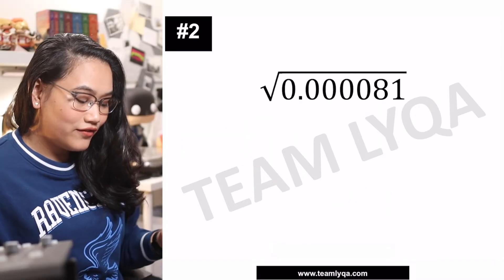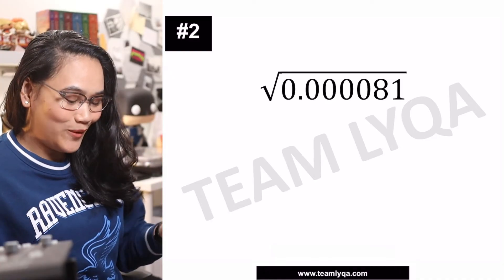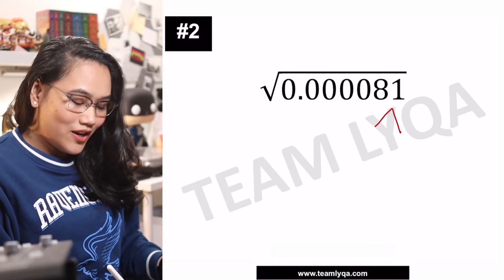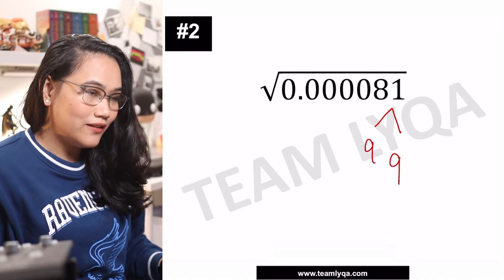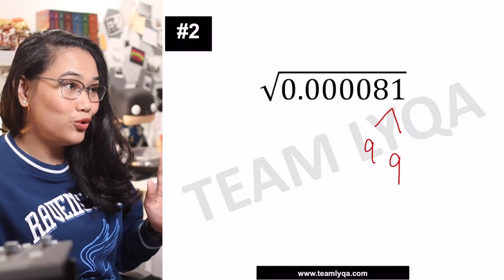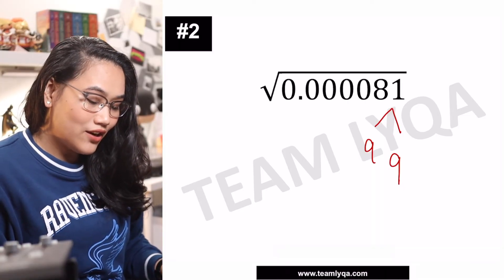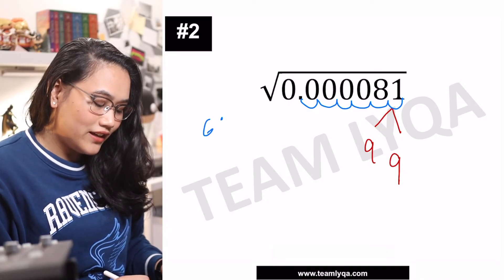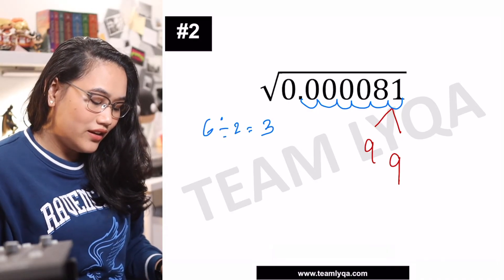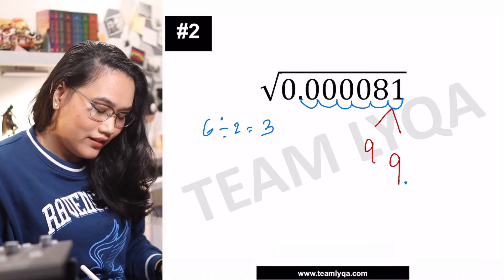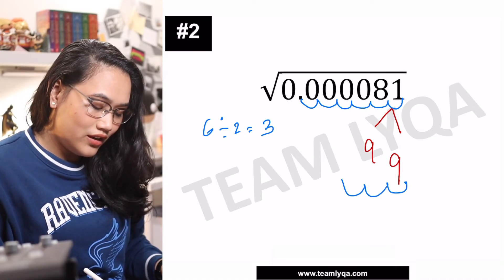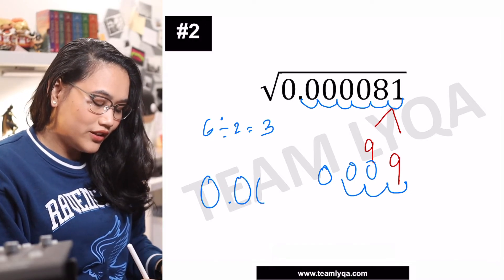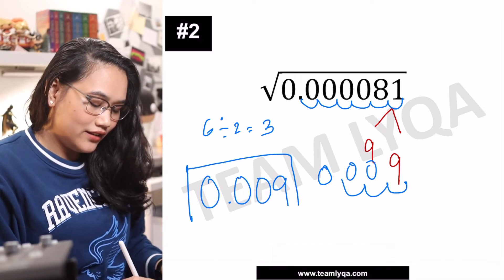Next, we have √0.000081. Same thing. We'll just split it. 81 is just 9 times 9. So that means 9 is the last digit of our answer. Let's count the decimal places. 1, 2, 3, 4, 5, 6. 6 divided by 2 is 3. So from 9, 1, 2, 3, this is 0.009. 0.009 is our final answer. Did you get it right?